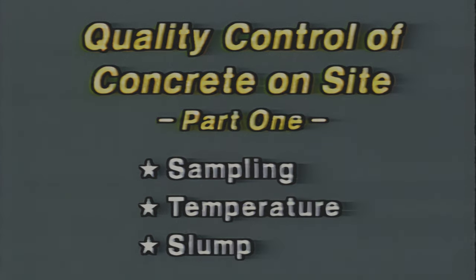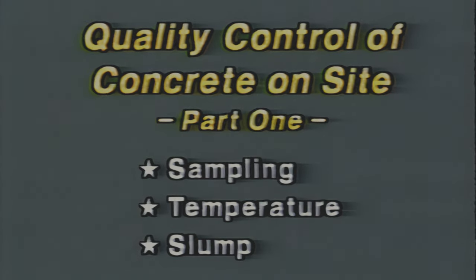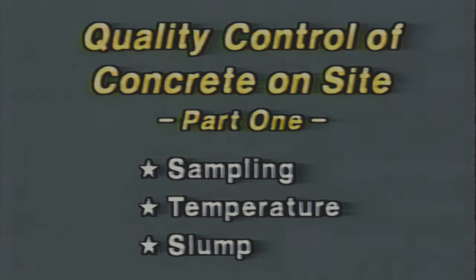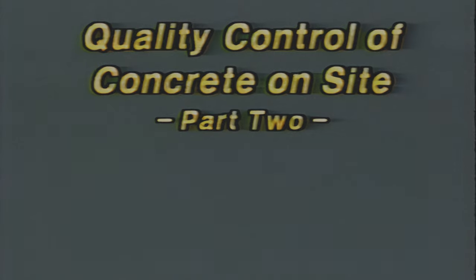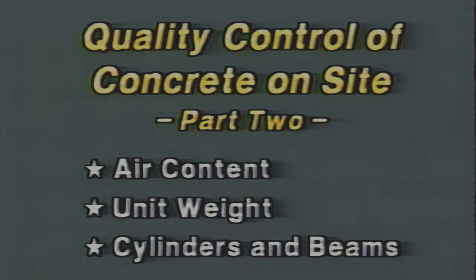And that's sampling, temperature, and slump — the end of part one. In part two, we'll cover air content, unit weight, and the making of cylinders and beams.